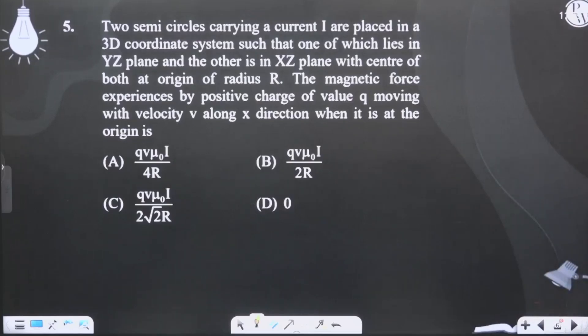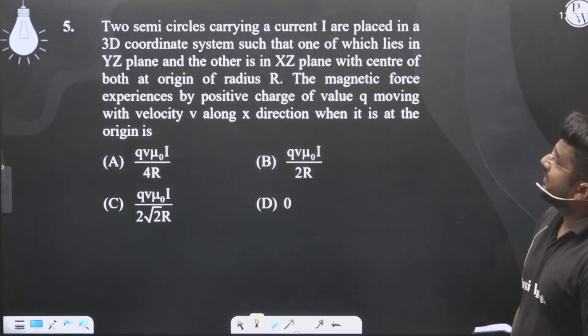Two semicircular current carrying loops with current I are placed in a 3D coordinate system such that one lies in the YZ plane and the other in the XZ plane, with the center of both at the origin with radius R. The magnetic force experienced by a positive charge of value Q moving with velocity V along the x-axis when it is at the origin.